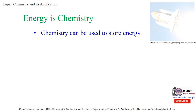Energy can be stored through batteries — batteries are chemistry. Normally we have seen that people use different batteries in our homes for saving electricity, with the help of UPS, and that electricity is being used throughout the day. How does electricity become stored into a battery? Definitely there are chemicals which help to store electricity into the battery.